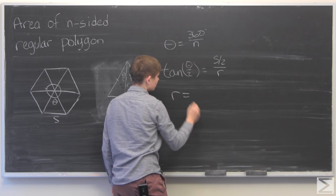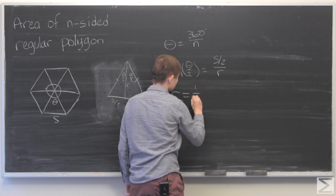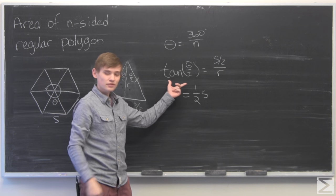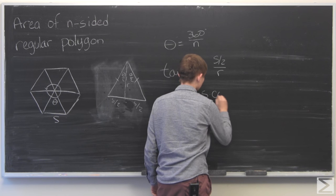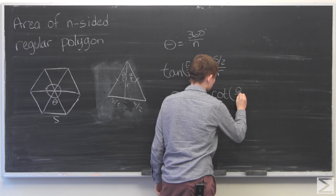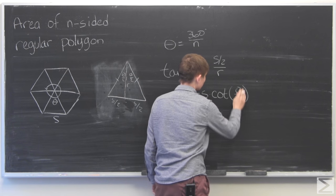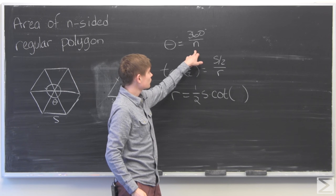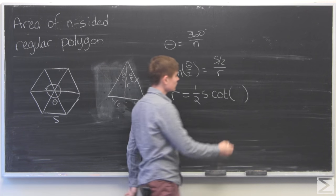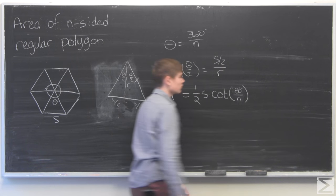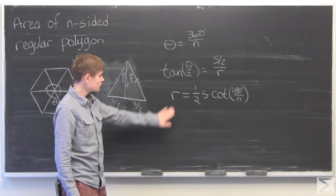And then we can solve for R. And we get R is equal to 1 half times S. And since we're dividing by tangent, we can just write it as cotangent of theta over 2, which we can actually just write as 360 degrees over N divided by 2 or 180 over N. So now we have R.